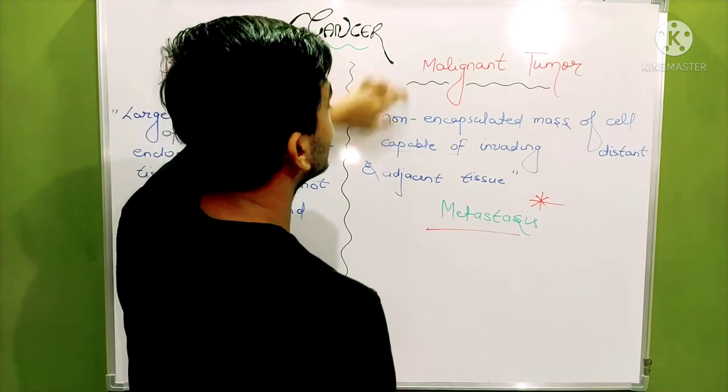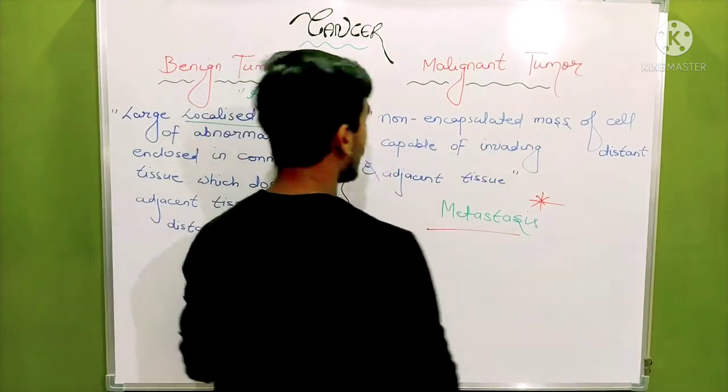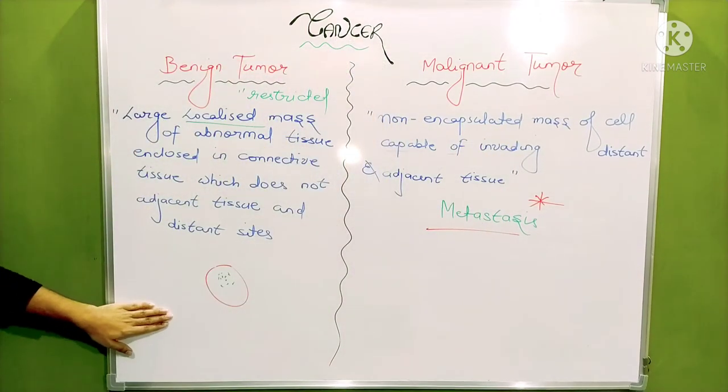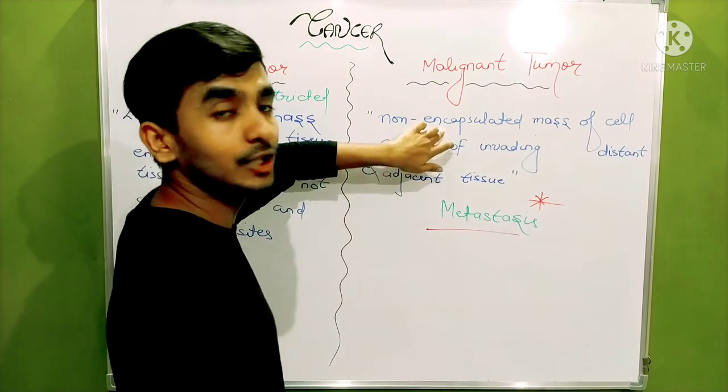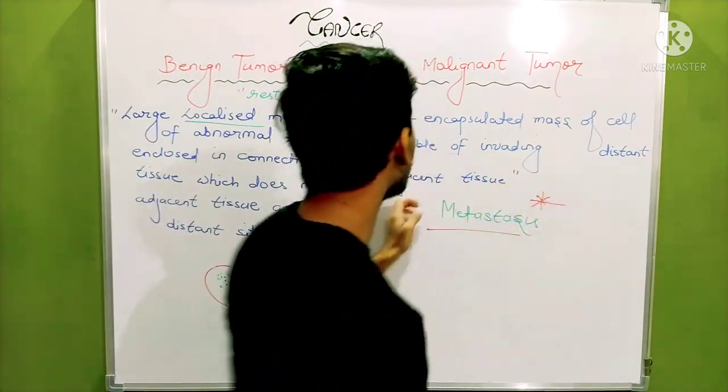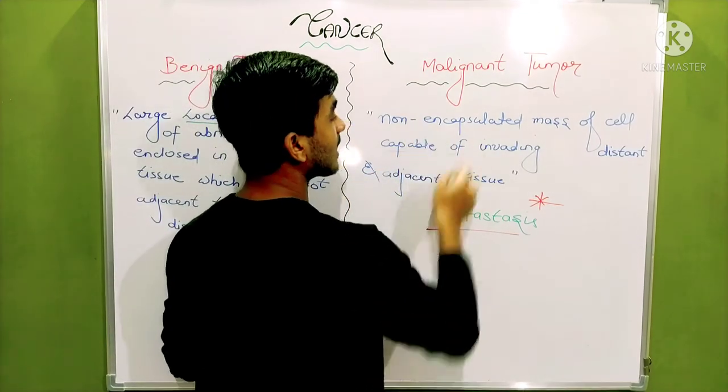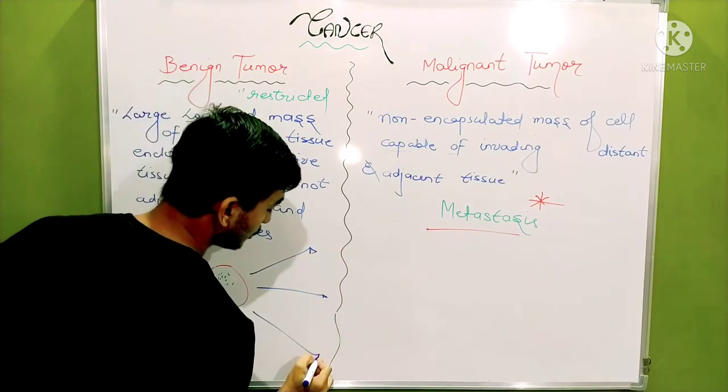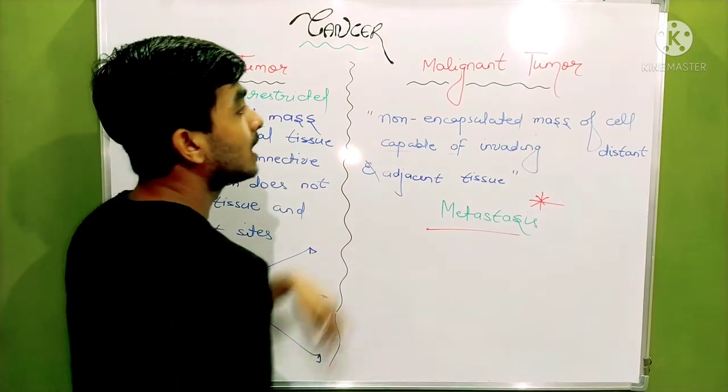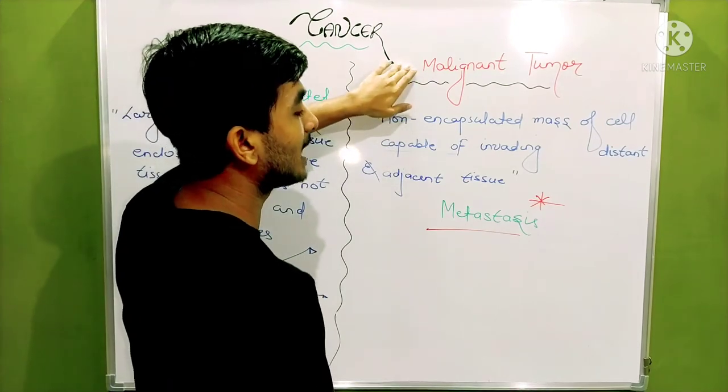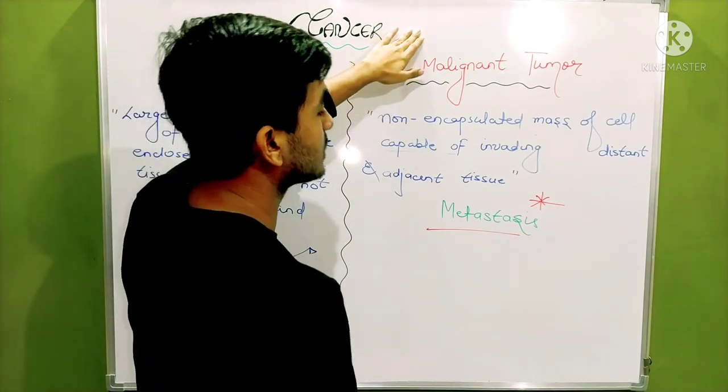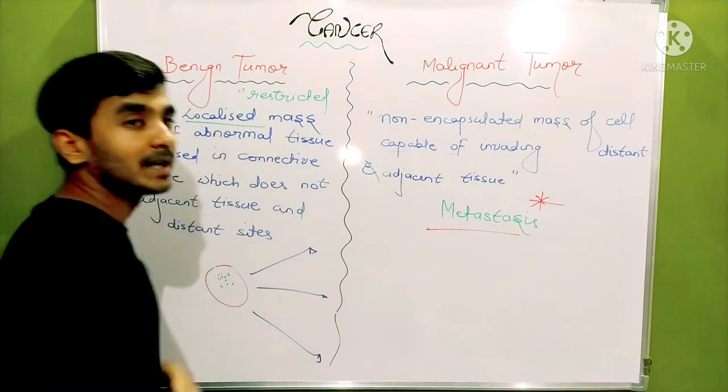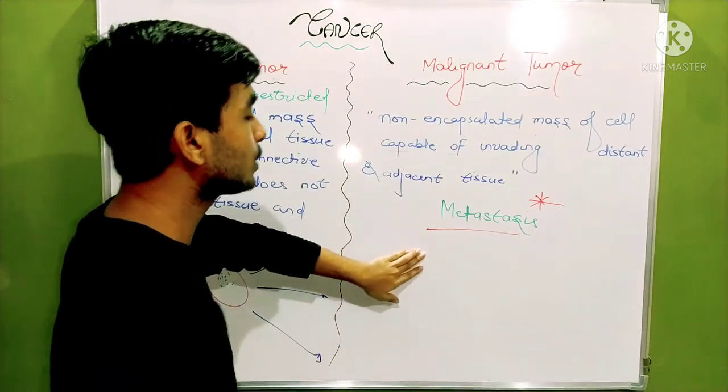Malignant tumour is non-encapsulated. Non-encapsulated means the group of cells is not prohibited by boundaries by all sites. It is clear to growth and capable of invading distant and adjacent tissue. It will start to spread from one region to another region. And this phenomenon by which malignant tumour spreads from its location of origin to other locations is called metastasis. Metastasis means spreading of the tumour from its origin to other places.